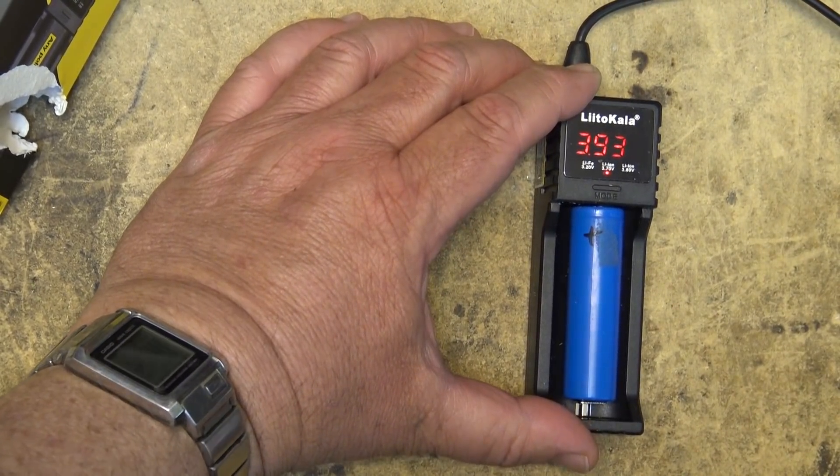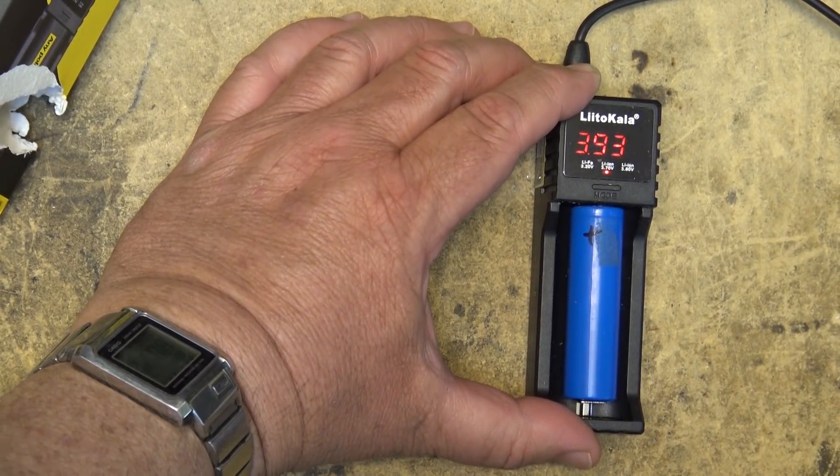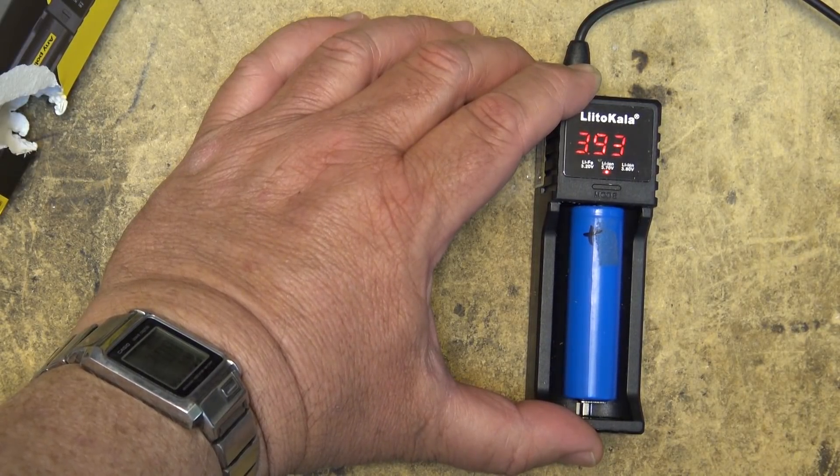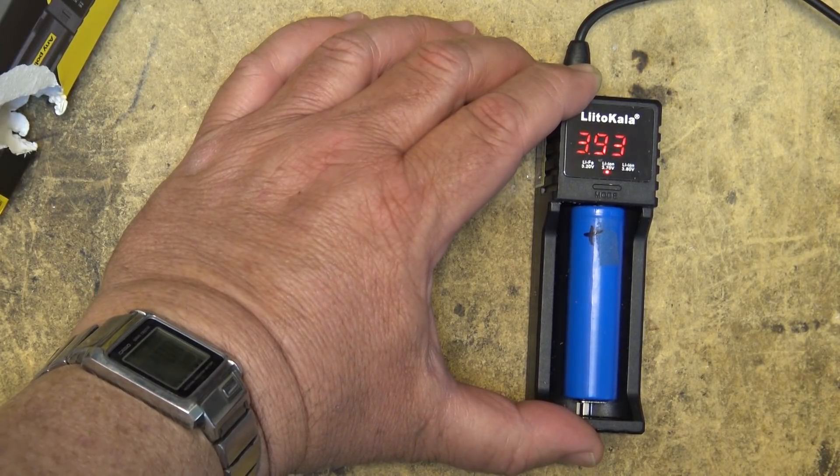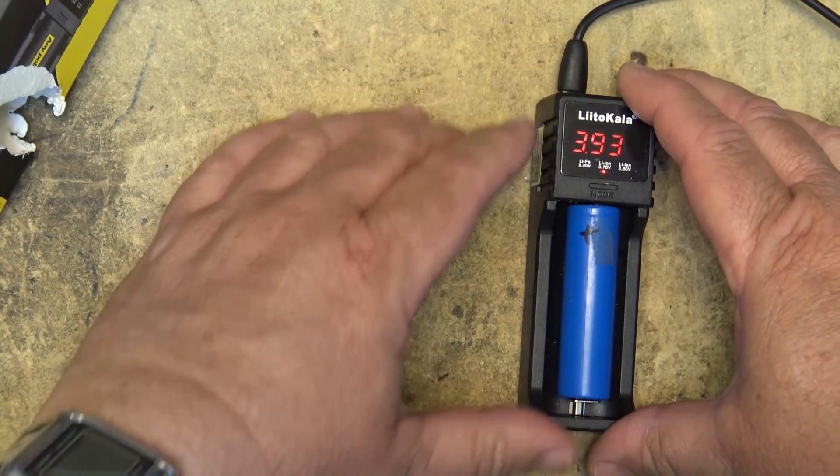So as the cell continues to charge here, you can see now that we've reached 3.93 volts. It'll continue to charge until the cell gets to its full voltage, although it's not telling me how much it's put into the cell.